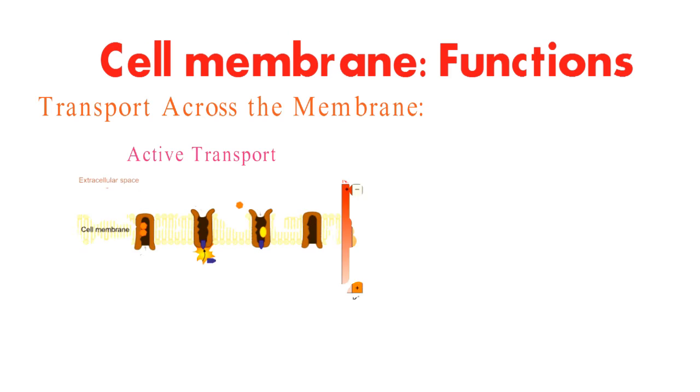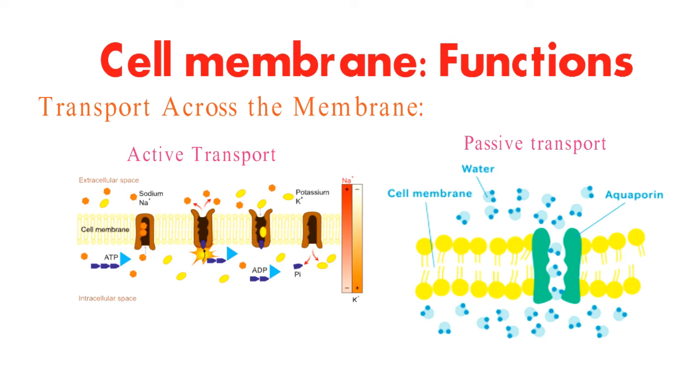Let's dive into the various ways molecules move across the membrane. Active transport uses energy to move molecules against their concentration gradient, while passive transport relies on the gradient and doesn't require energy. Diffusion, facilitated diffusion, osmosis. These processes keep the cell in balance with its environment.